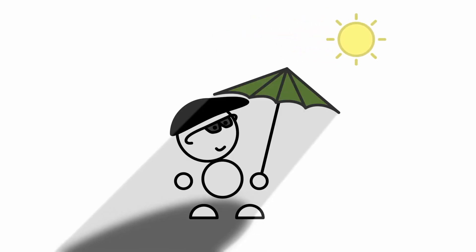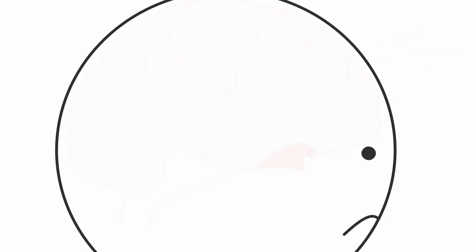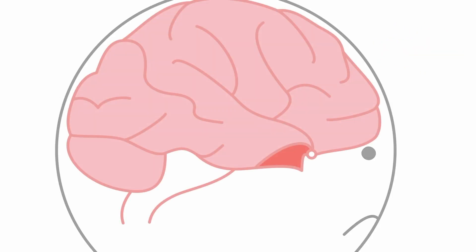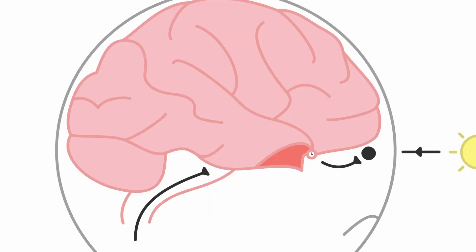That obviously doesn't happen in humans, so how does it work in us? While research is ongoing, most scientists agree that the suprachiasmatic nucleus, a group of cells in the hypothalamus, uses the system I described to function as the master clock for the whole body.